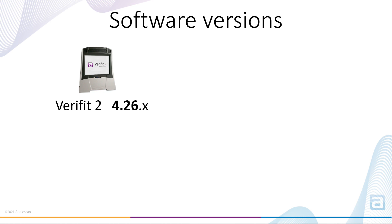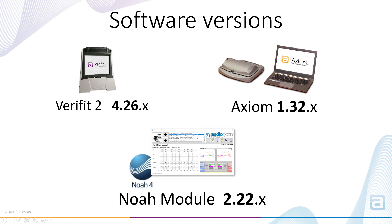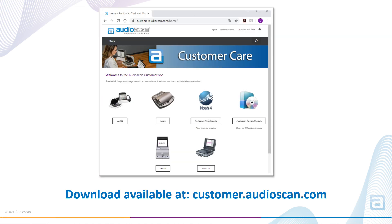Software for Verifit 2 is now at version 4.26, Axiom is 1.32, and the AudioScan NOAA module will be at 2.22. It's important to always update your NOAA module to retain compatibility with your equipment and the latest data standards. The no-charge software update is available for download on our customer site at customer.audioscan.com.